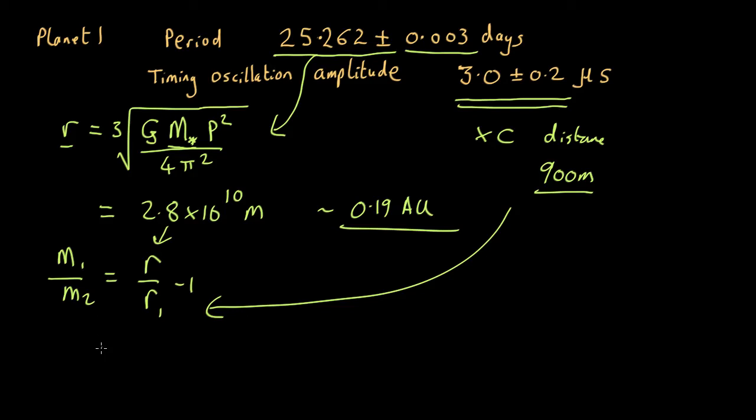And we end up, according to this, with the mass of the planet, M2, of about 9 by 10 to the 22 kilograms, which is about 0.02 times the mass of the Earth. Very small.